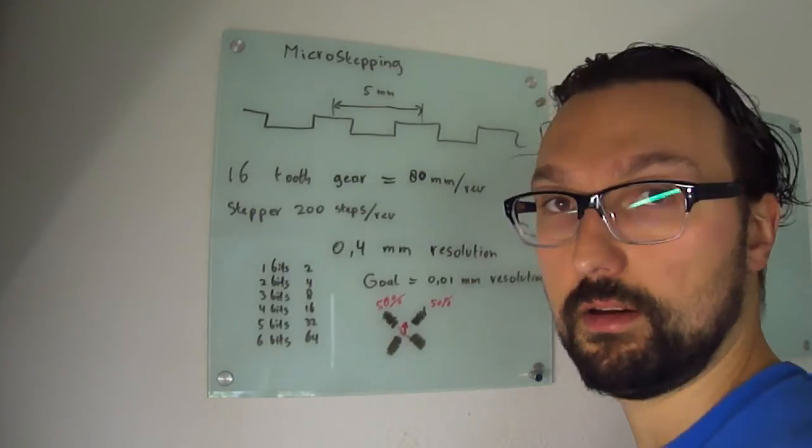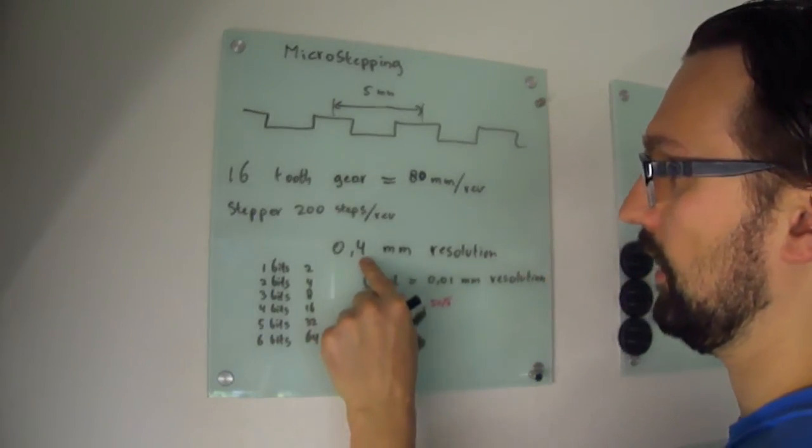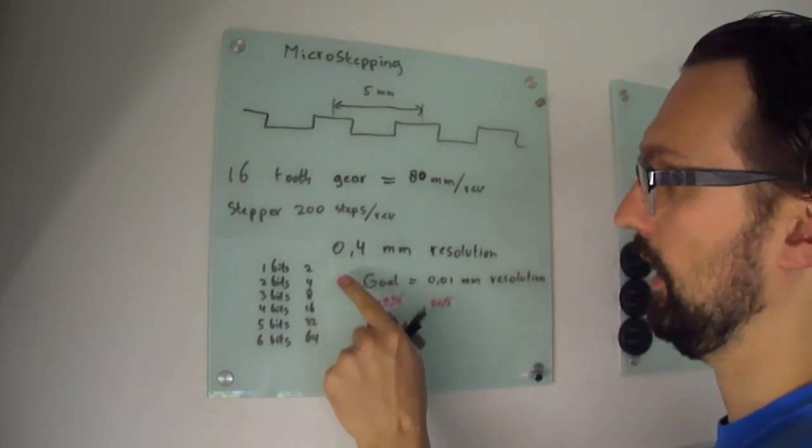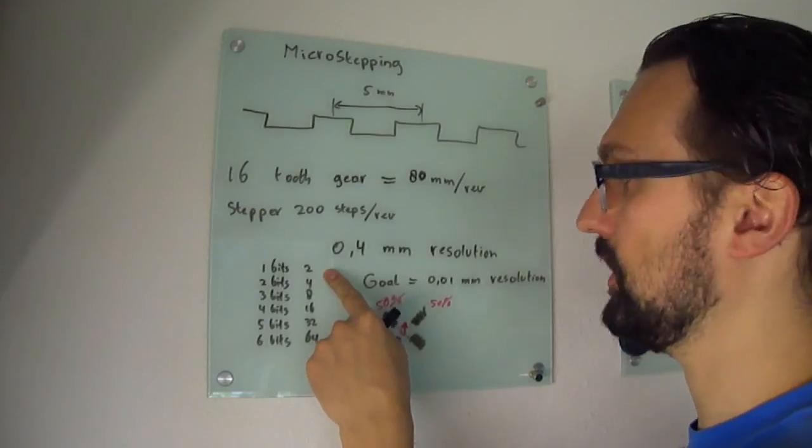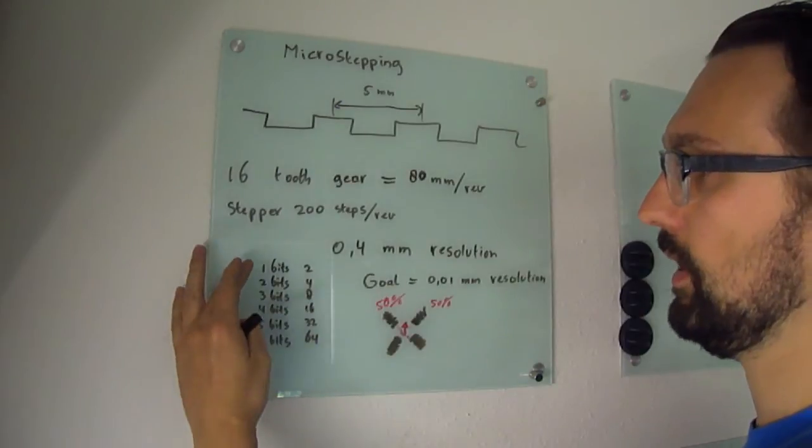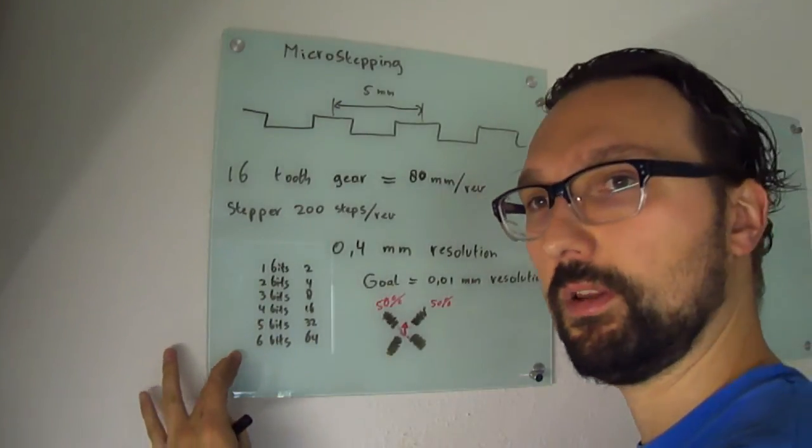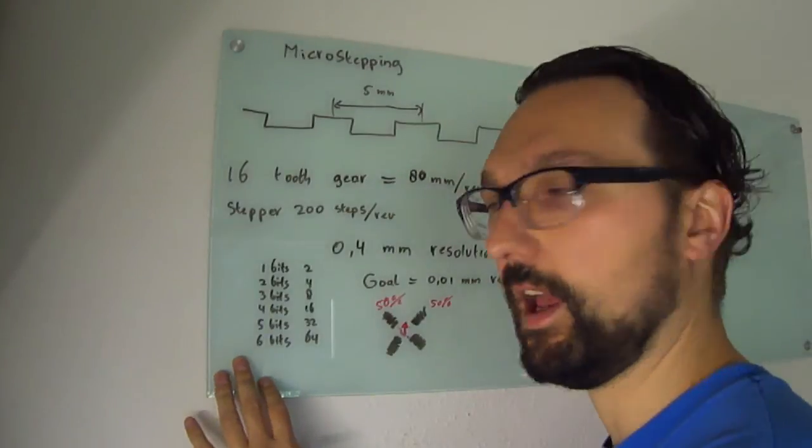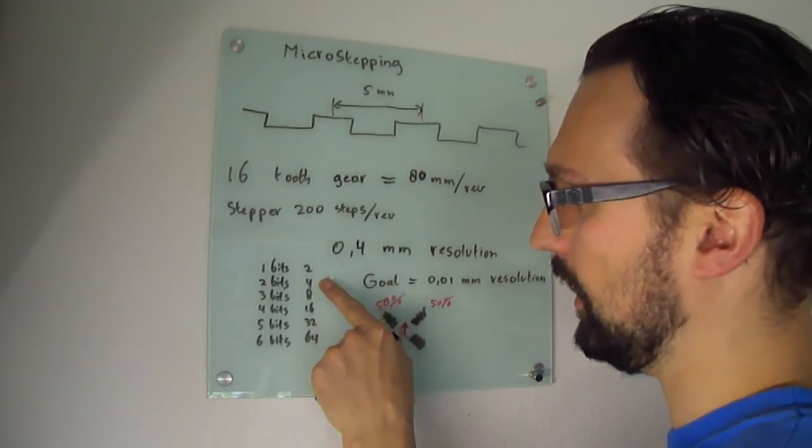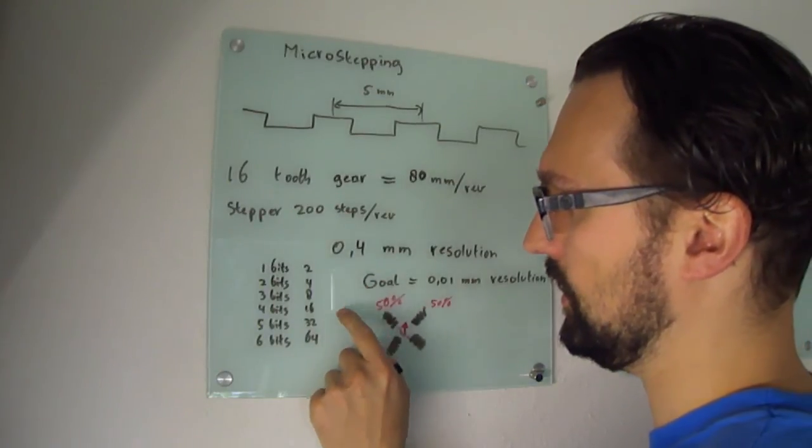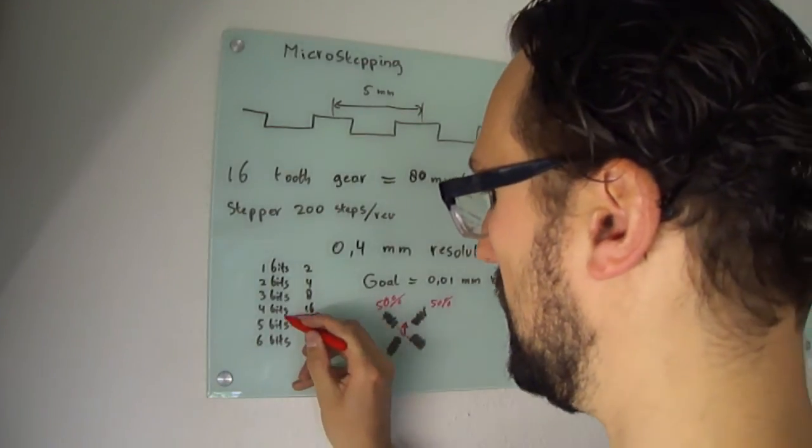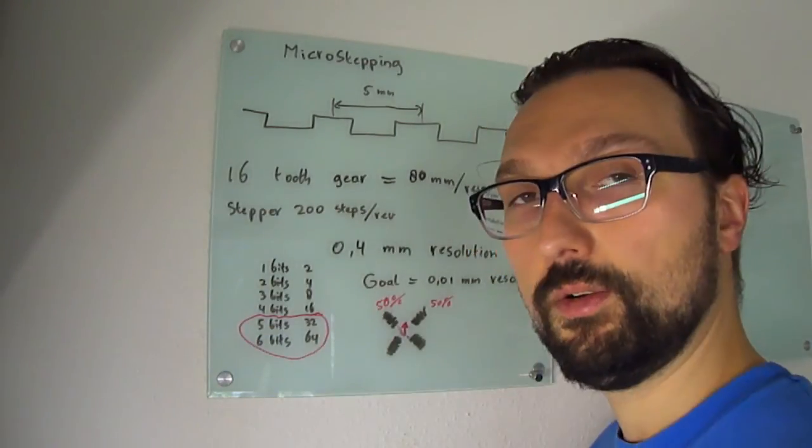You will add an in between value, so that would lower this number 0.4 to 0.2. So I can divide it by two if I do one bit microstepping. But I want to be here 0.01. So how many bits of microstepping, what resolution of microstepping do I need to have to come close to my goal? Well I made a little list. It's very obvious of course: two, four, eight, 16, 32, 64. So in the region somewhere here in this area.